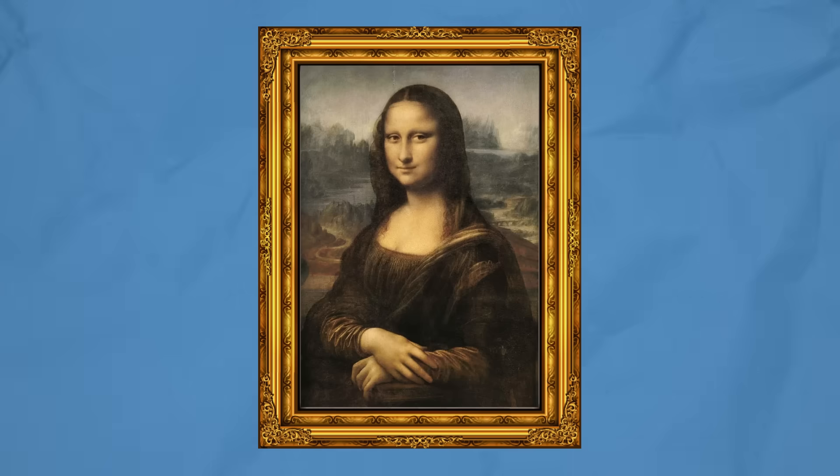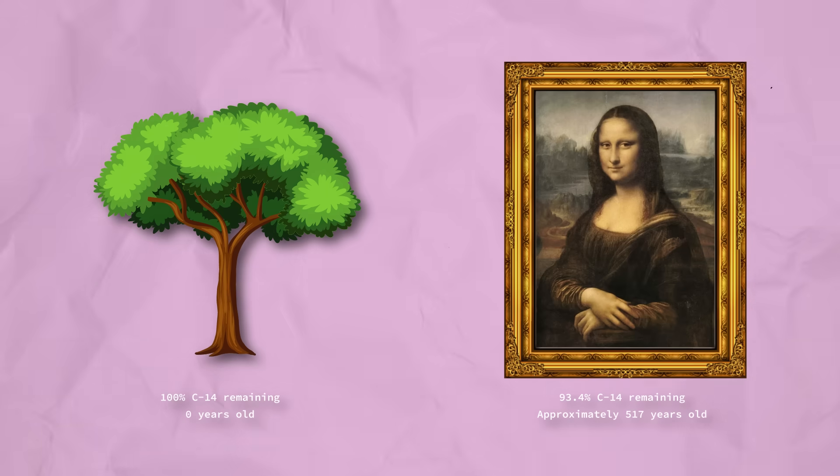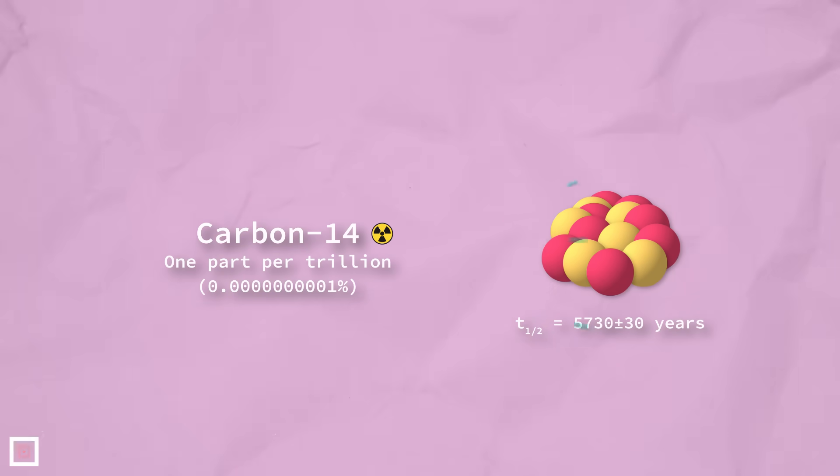That's how we do carbon dating, we just check how much carbon-14 is left in something compared to if it was new. Fortunately for us, most carbon isn't radioactive, and 5,500 years is a pretty damn long time.